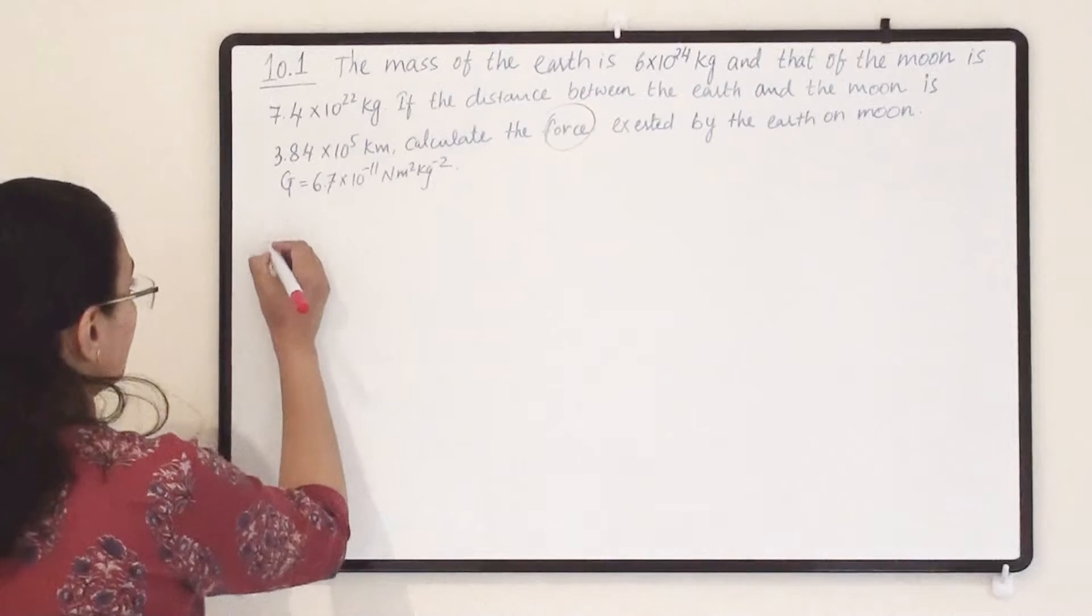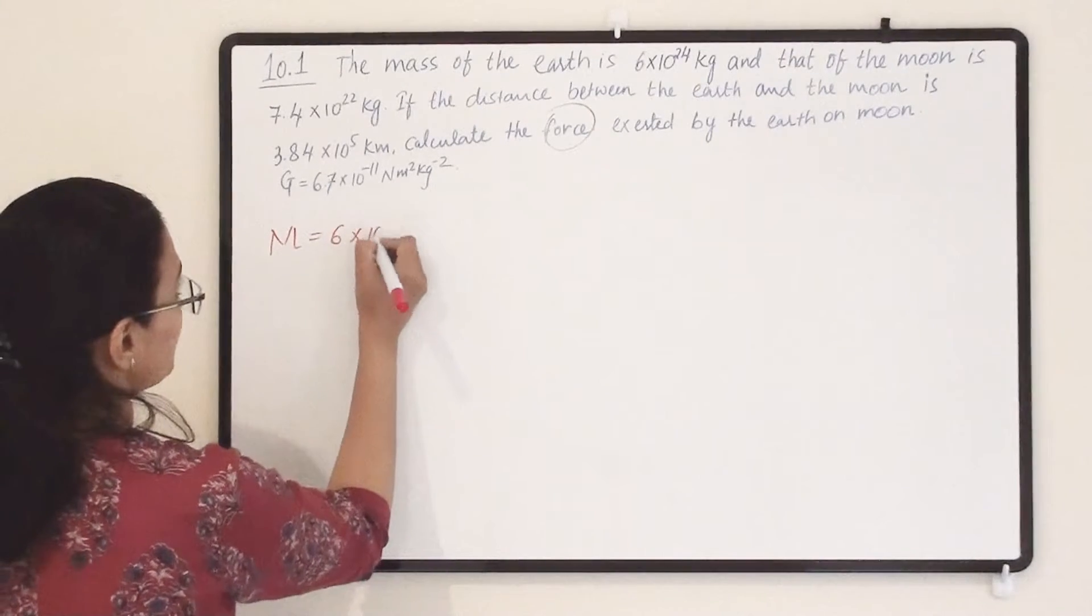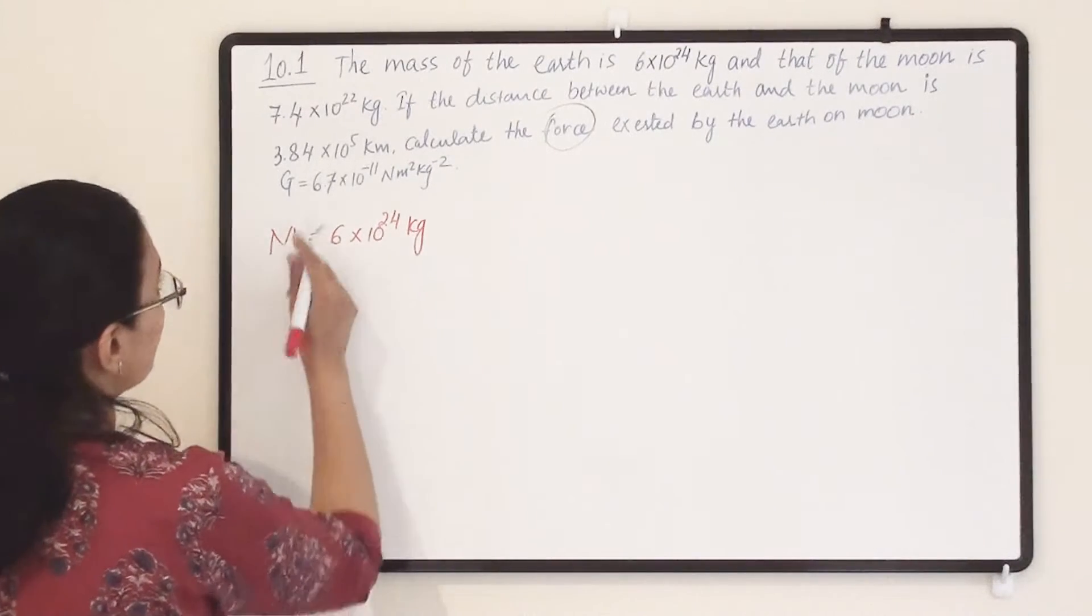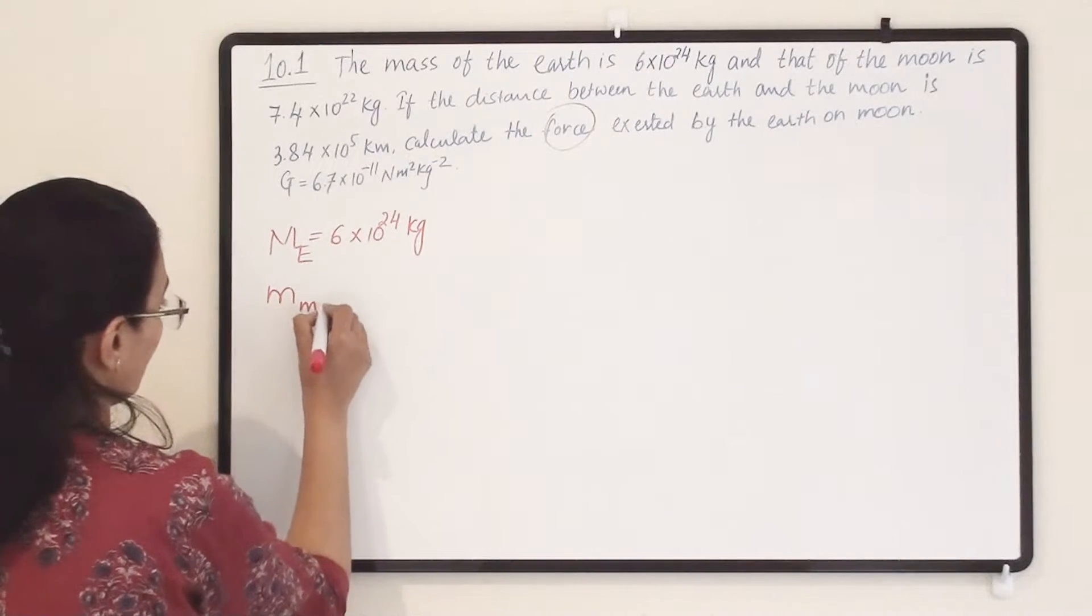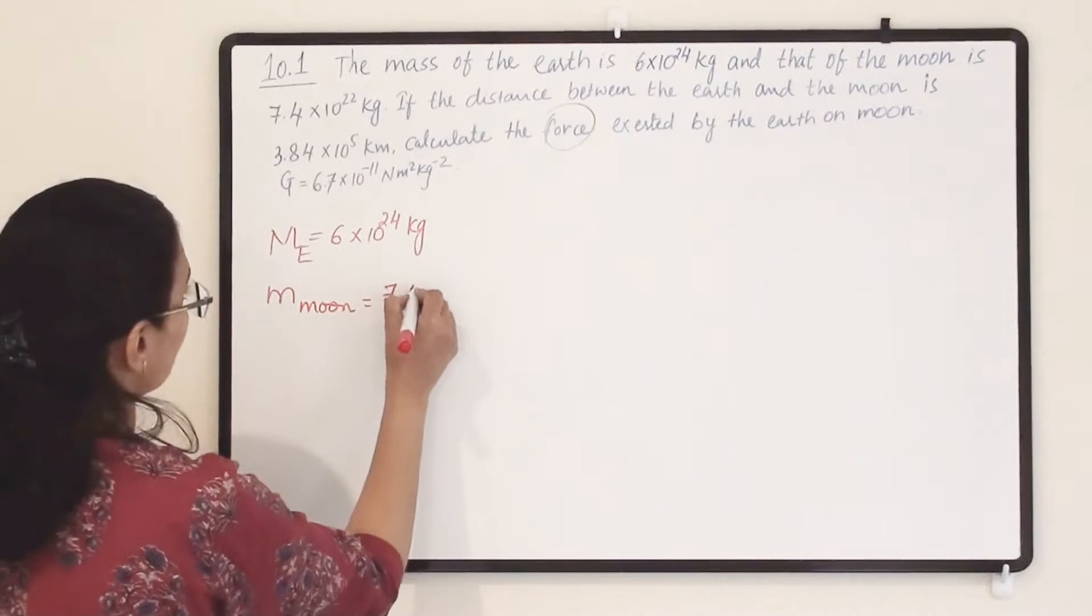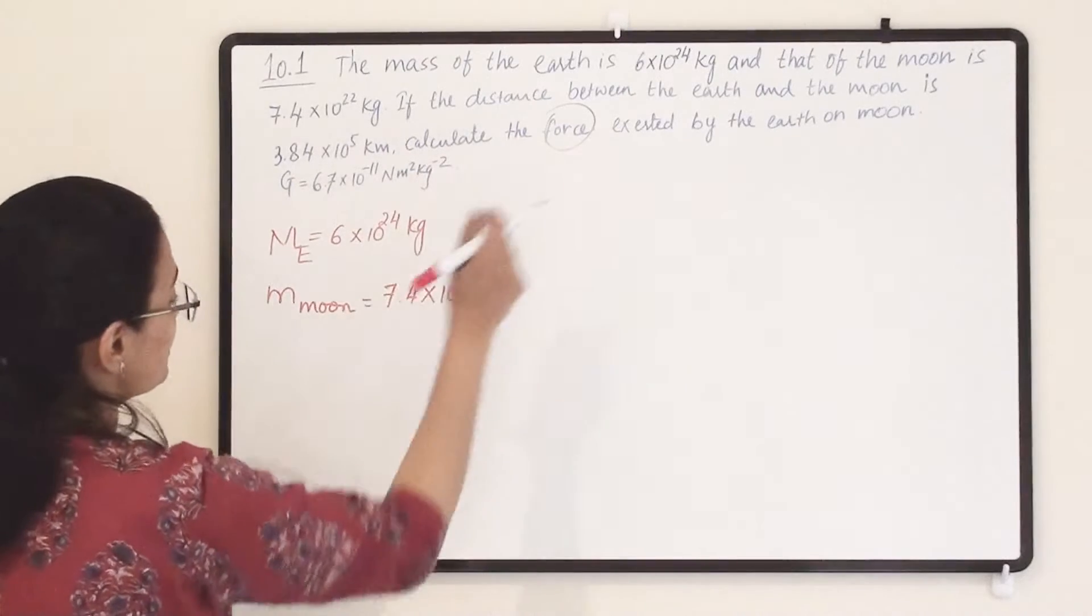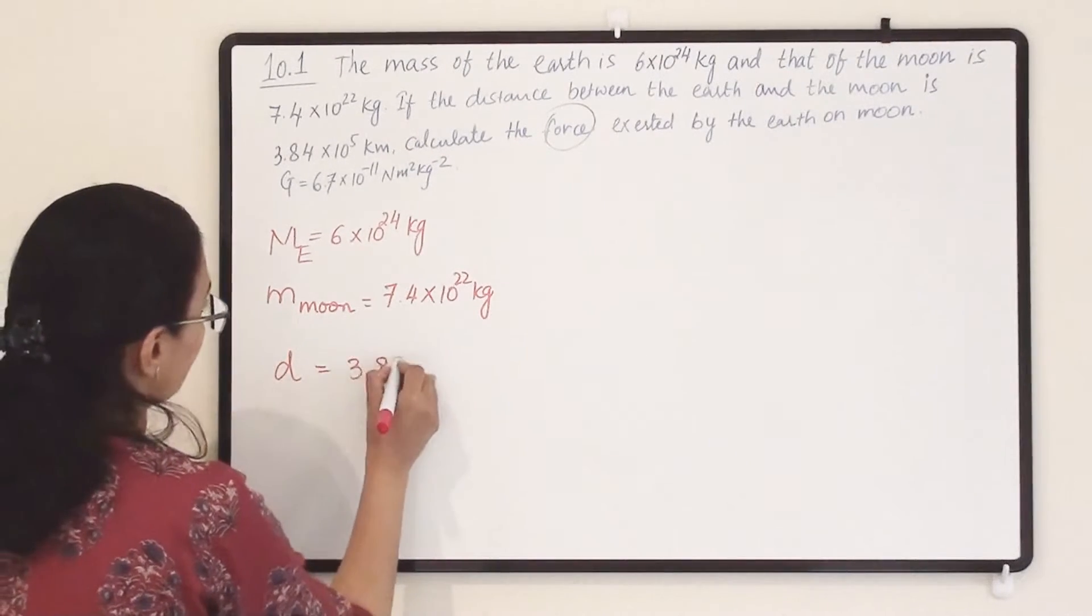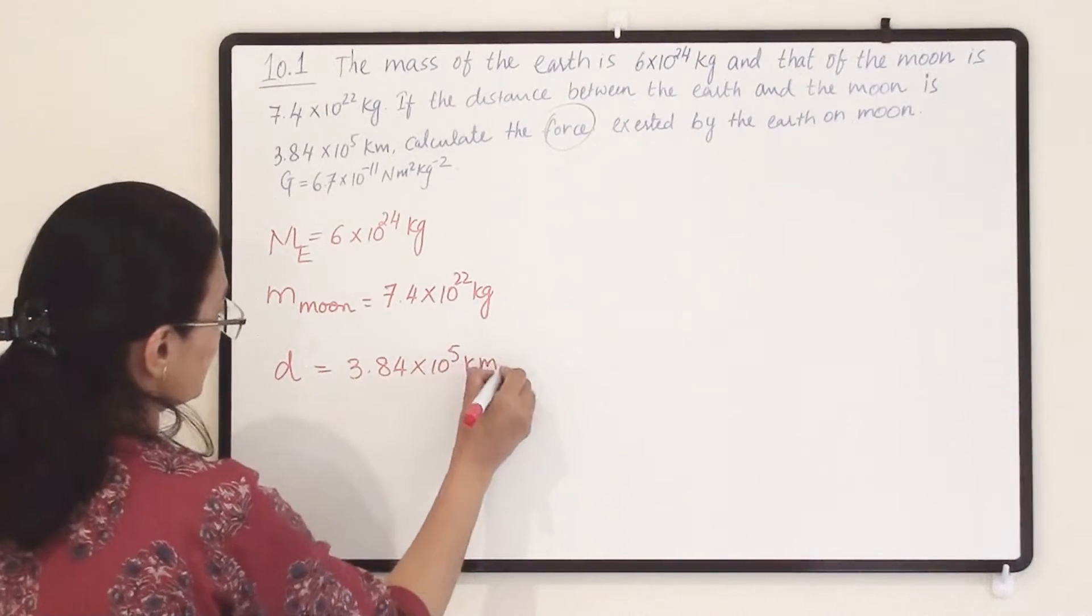Mass of the Earth, M_E equals 6×10²⁴ kg. Mass of the moon, M_m equals 7.4×10²² kg. Distance between them, d equals 3.84×10⁵ km.